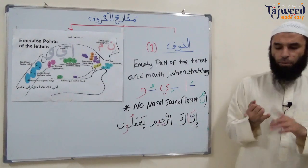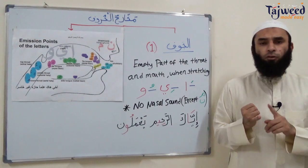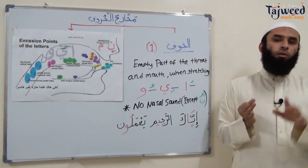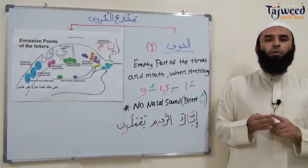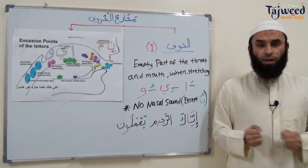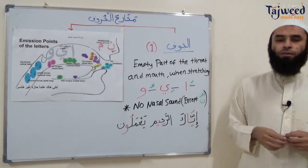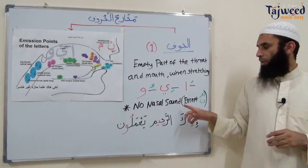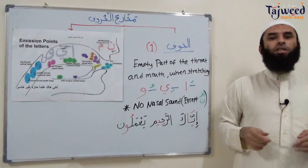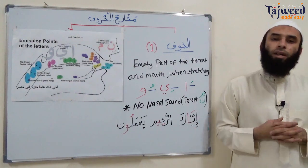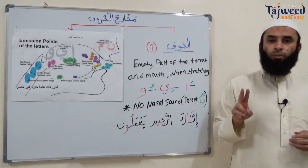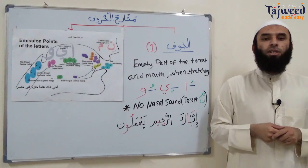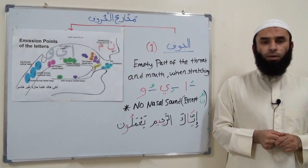Today we looked at four things. Number one, the definitions of مَخَارِجُ الْحُرُوفِ. Number two, how to pinpoint a مَخْرَج — the two ways. Number three, an overall summary of مَخَارِجُ الْحُرُوفِ. And number four, we looked at the first area of the five areas — Al-Jawf — the empty part of the throat when stretching أَلِفْ، وَاو، and يَاء. We should avoid a gunnah, a nasalization sound when stretching the letters, other than مِيم and نُون. In the next lesson, we'll do الشَّفَتَان and الْخَيشُوم — the lips and the nasal passage. جزاكم الله خيراً والسلام عليكم ورحمة الله وبركاته.